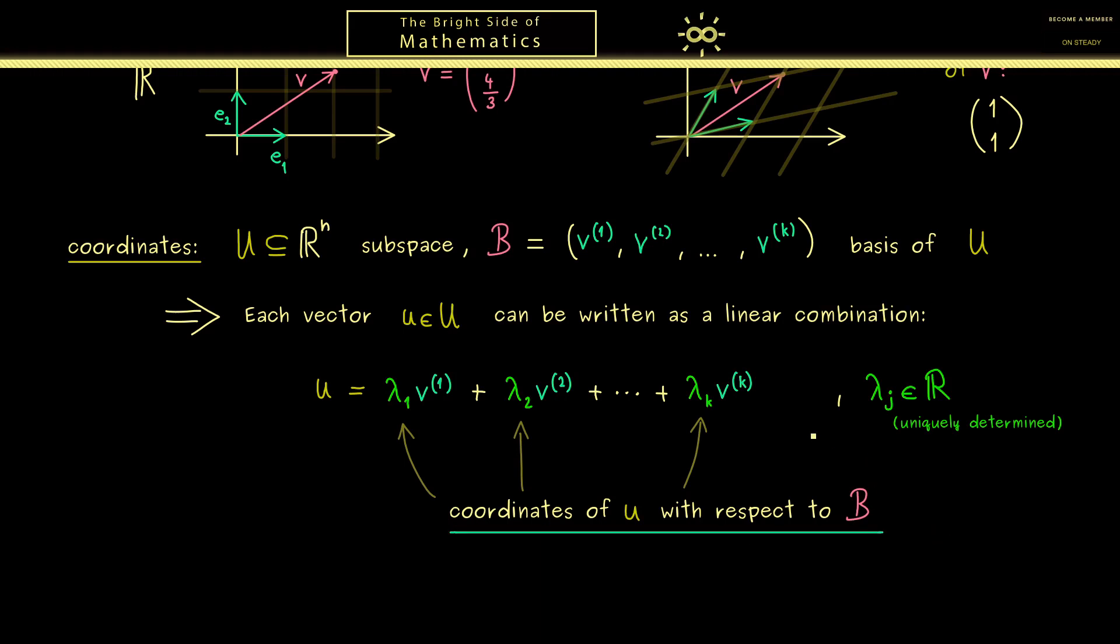And of course if we have these uniquely determined numbers and the basis B we can regenerate the original vector u in Rⁿ. And for this reason there is a special notation one uses sometimes to denote the vector u.